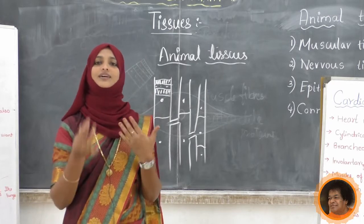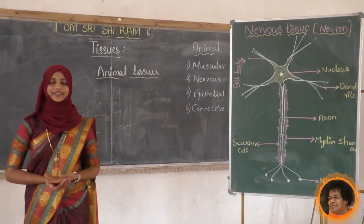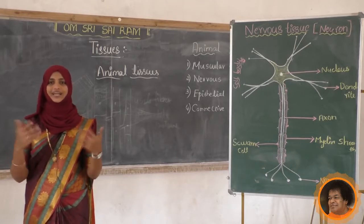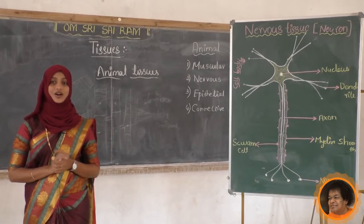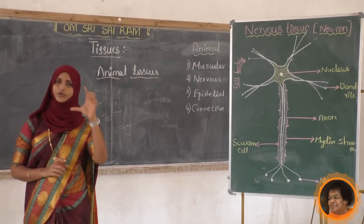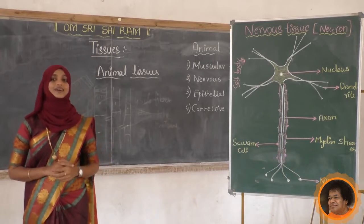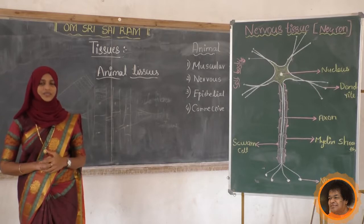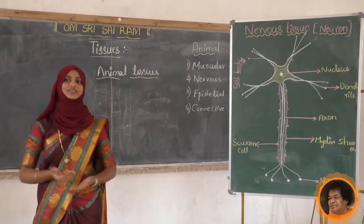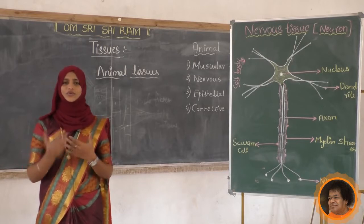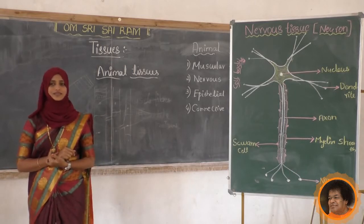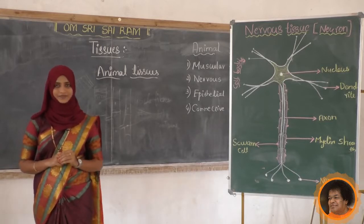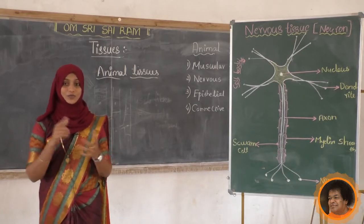Next we will move to nervous tissue. Nervous tissue is also called a neuron. A single unit of nervous tissue is called a neuron - that is a single cell. These neurons are a very important tissue in our body. These tissues are responsible for responding to stimuli.